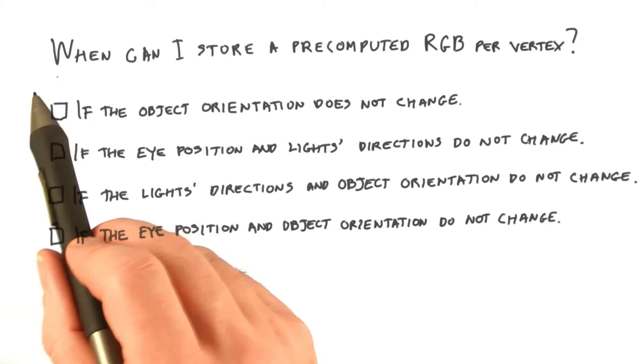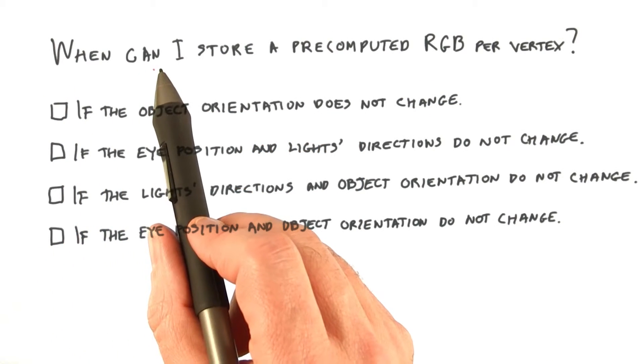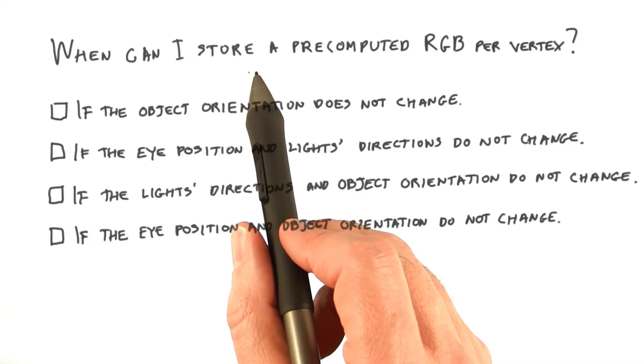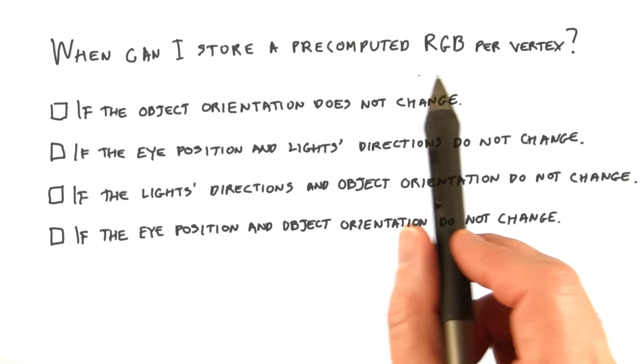Instead of storing the surface normal, under what exact conditions could I safely compute the lighting once and store an RGB color at each vertex?